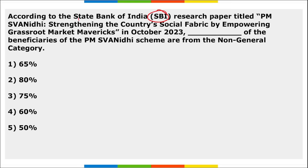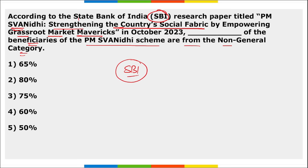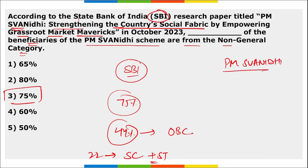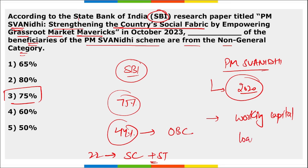According to an SBI research paper titled 'PM SVANidhi: Strengthening the Country's Social Fabric by Empowering Grassroot Market Mavericks,' 75% of the beneficiaries of PM SVANidhi scheme are from the non-general category — 44% from OBC and 22% from SC and ST. The PM SVANidhi scheme was launched in 2020 with the aim to provide working capital loans to street vendors.